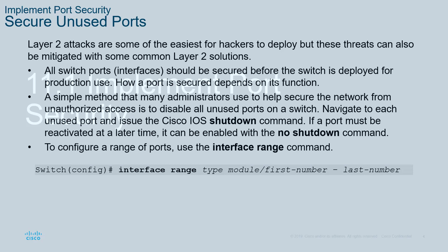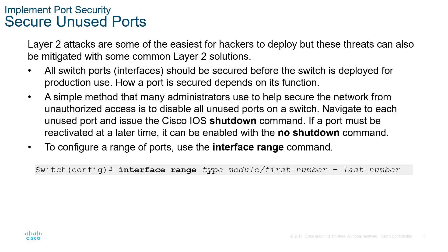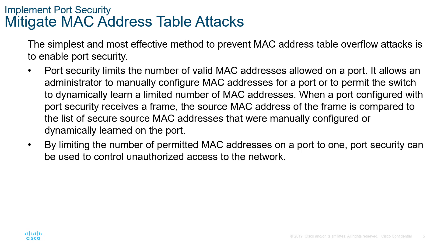Implementing port security. First thing is we should be securing all unused ports, meaning they should be turned off. If there's not a reason for them to be on, you can do an interface range and power all of them off. The fact that ports are left on presents one of the larger security risks. We can mitigate a lot of common types of MAC address table attacks by not allowing the device on the network, by limiting the number of permitted MAC addresses on a port.